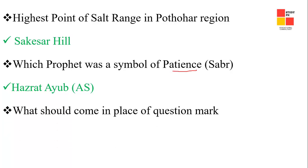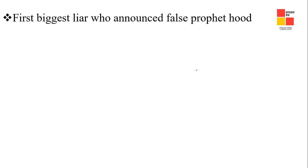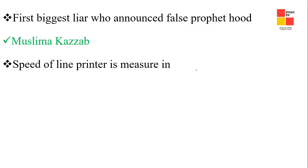Next question: what should come in place of the question mark? The answer is 21. Next question: the first biggest liar who announced a false prophet — the right answer is Musailama al-Kazzab, who announced himself as a false prophet.